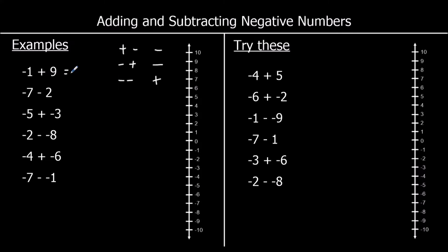The first one says negative 1 plus 9. So we start at negative 1 and go up 9 spaces — that is 8. Next: negative 7 take away 2. Negative 7 is our starting point, we're going down 2, so that's negative 9.